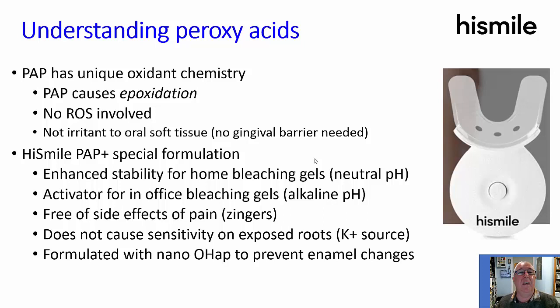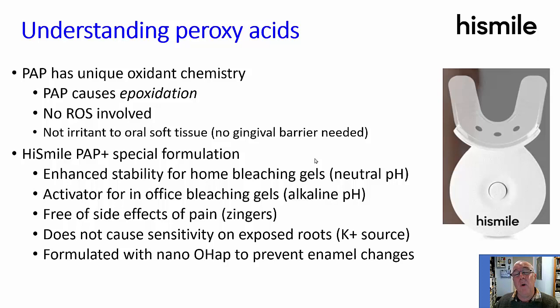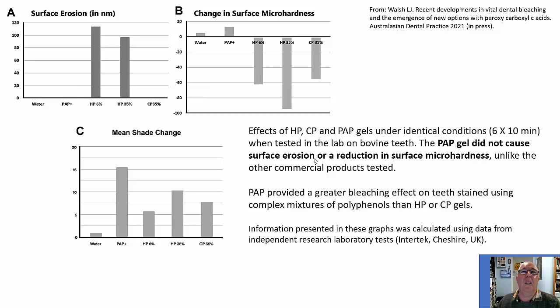Where they differ is the concentration of the PAP active ingredient and also the pH — the at-home product is neutral, while the in-office is used at an elevated pH of 8.5. Regardless of which you use, because you don't have oxygen radicals and hydrogen peroxide penetrating through the tooth to reach the pulp, you don't go through the catalase neutralization response, so you don't get zingers. The inclusion of an available source of potassium ions has a desensitizing effect, and formulating the product with a very small particle size of nanohydroxyapatite means you can get a high concentration of mineral phases, which also stops enamel dissolution and softening. This is where the 'plus' comes from.